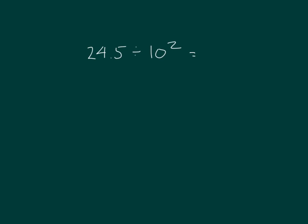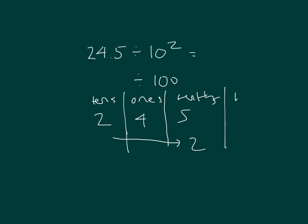Here's one more problem, where we're dividing 24 and 5 tenths by 10 squared. Dividing it by 10 squared, that is also the same as dividing it by 100. Where do those digits shift? They shift two places over. So that our number is going to be 0.245, or two hundred forty-five thousandths.